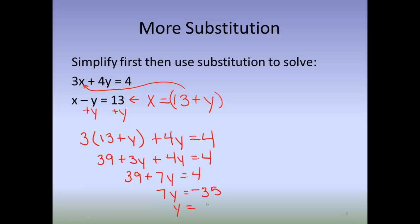Divide by 7 and I have y is negative 5. Again, I have to go back to the original. If x is 13 plus y, and now I know my y is negative 5, 13 plus negative 5 is 8. And so my ordered pair is 8, negative 5. So those are the examples of substitution you may have seen from Algebra 1.